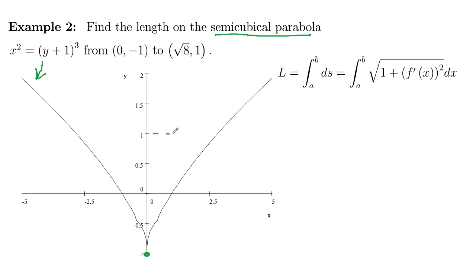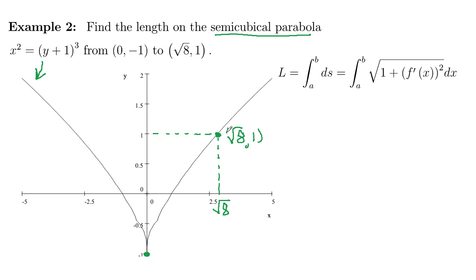So (0, -1) is down here on the graph, and this is the graph of x squared equals y plus 1 cubed. If we go across from y equal 1 and come down, this is going to be √8, so that is the point (√8, 1). We want to find the length of that piece right there.